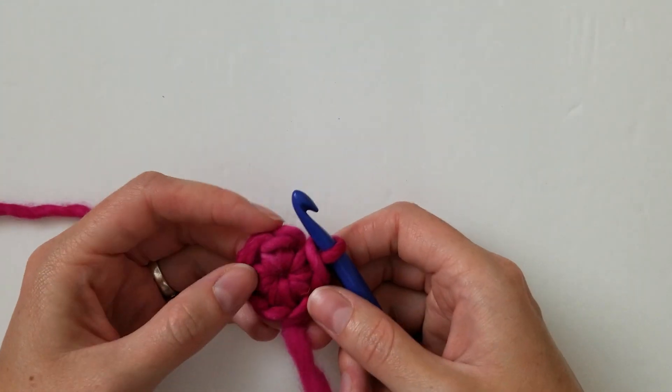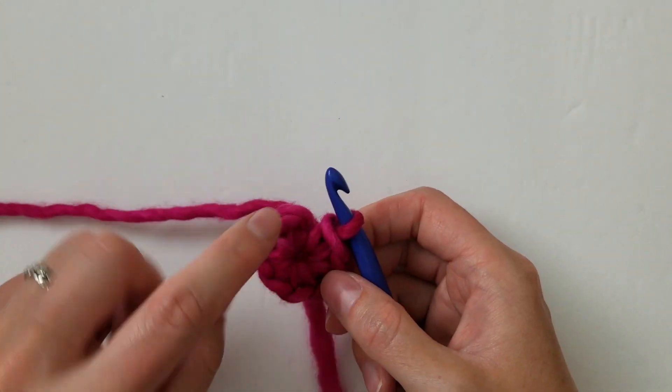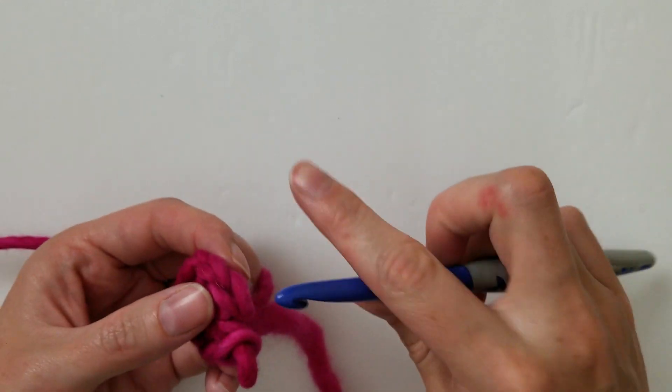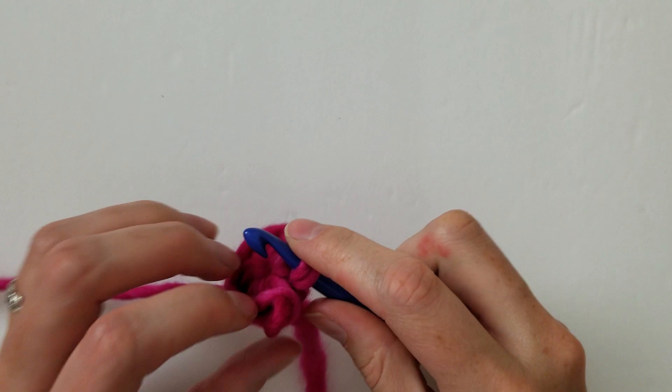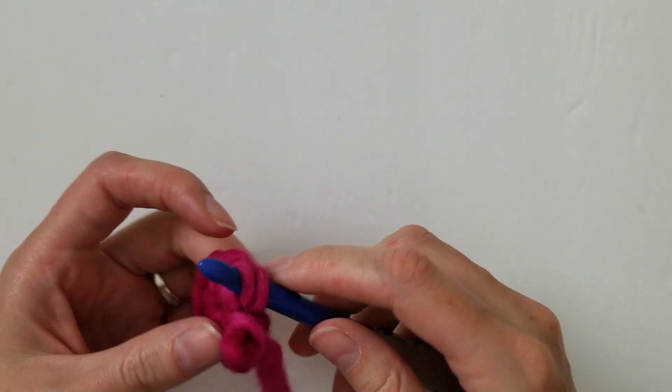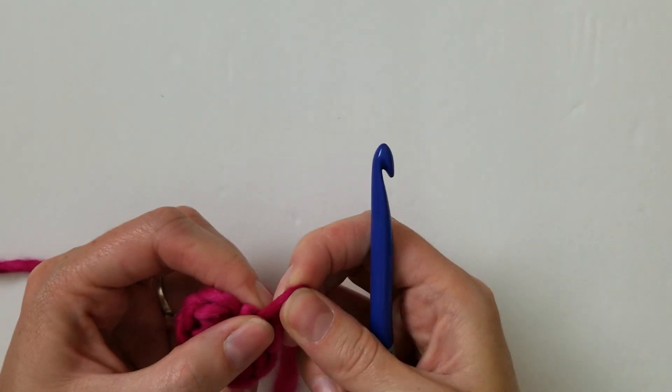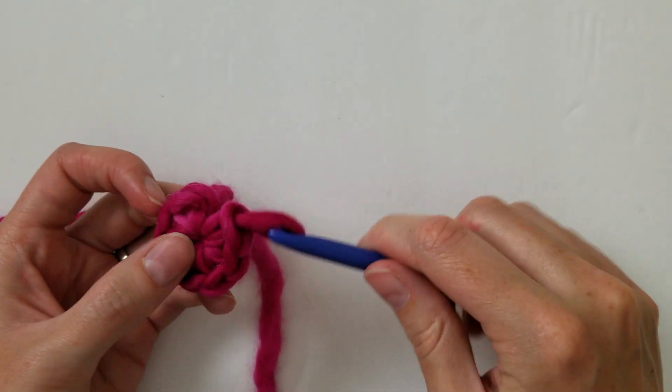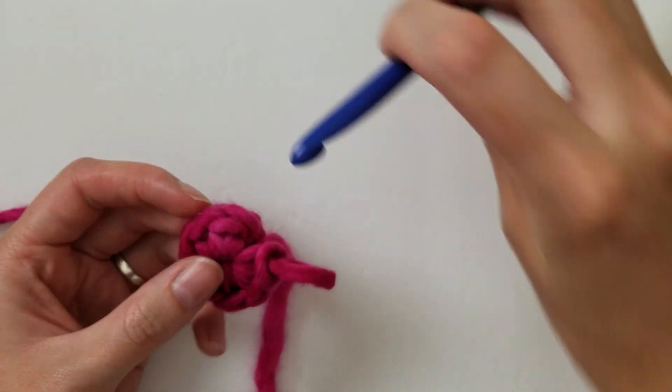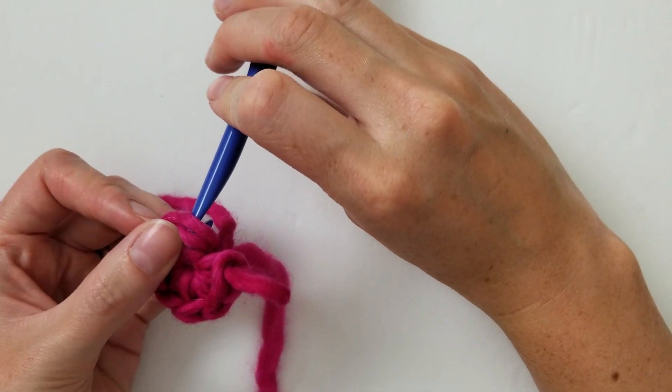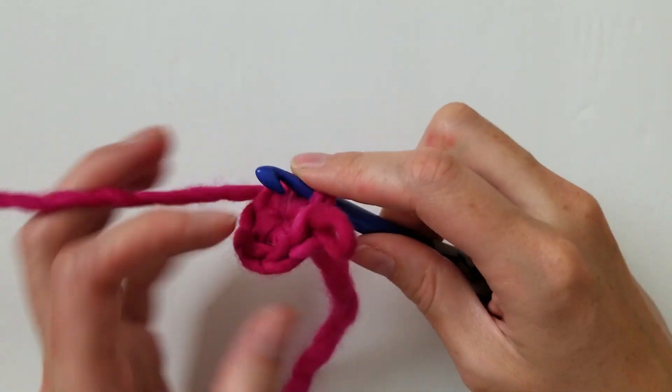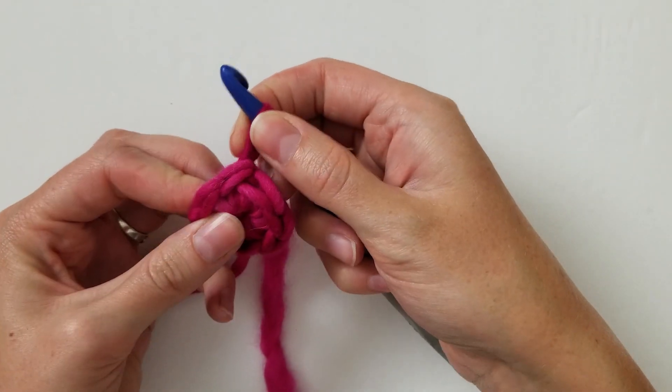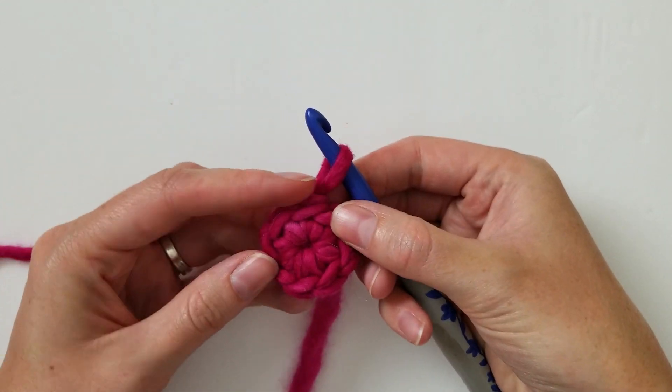Alright, so for this tutorial I'm going to start at the end of what's typically a row one, a magic ring with some single crochets in it. And what you do for the invisible slip stitch is you're going to pull out a little bit of a loop, remove your crochet hook, and then you're going to go from the back to the front of the next stitch. You're going to yarn over and just pull that loop through. When you pull it tight it essentially disappears.